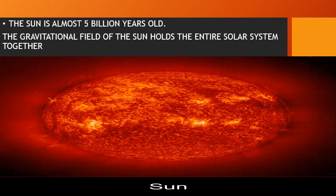Sunlight reaches the earth in about 8 minutes. The surface temperature of the sun is 5700 degrees Celsius. You can imagine how remarkable this is when we say that the heat from the sun, after traveling 149 million kilometers, is still strong enough to give heat to the earth.